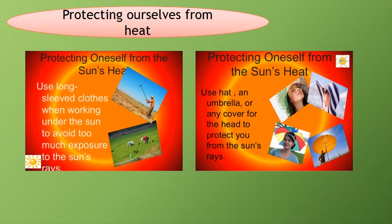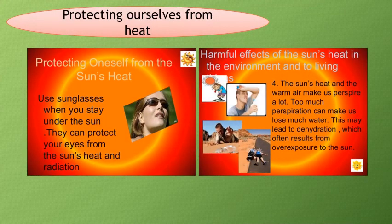What are the things that you do to protect yourself from the sun's heat? The following are the different ways to protect yourself from the sun's heat. First, use long-sleeved clothes when working under the sun to avoid too much exposure to the sun's rays. Second, use a hat, an umbrella, or any cover for the head to protect you from the sun's rays. Number three, use sunglasses when you stay under the sun. They can protect your eyes from the sun's heat and radiation. Remember to avoid looking directly at the sun.